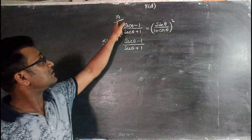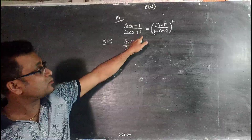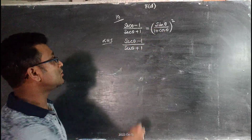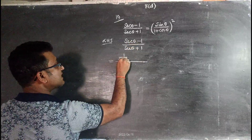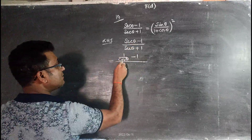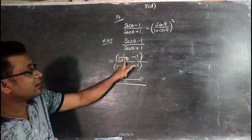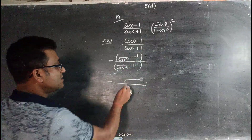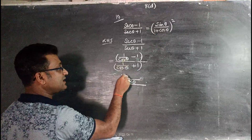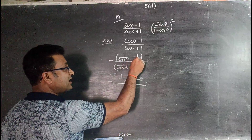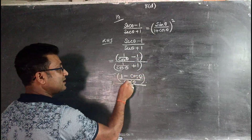Question number 19: prove (secθ - 1)/(secθ + 1) = (sinθ/(1 + cosθ))². Starting from the left hand side, write secθ as 1/cosθ. The numerator becomes (1/cosθ - 1) and denominator becomes (1/cosθ + 1). Taking LCM as cosθ: numerator becomes (1 - cosθ)/cosθ and denominator becomes (1 + cosθ)/cosθ.